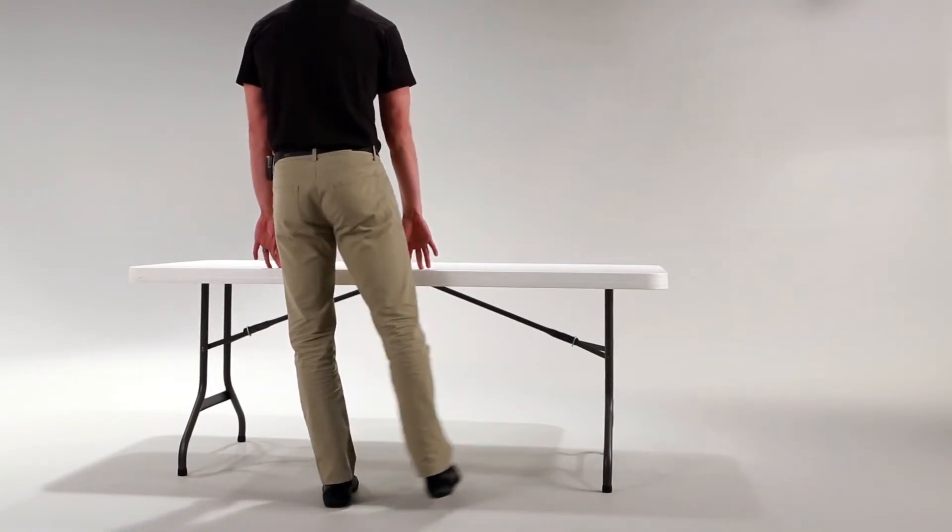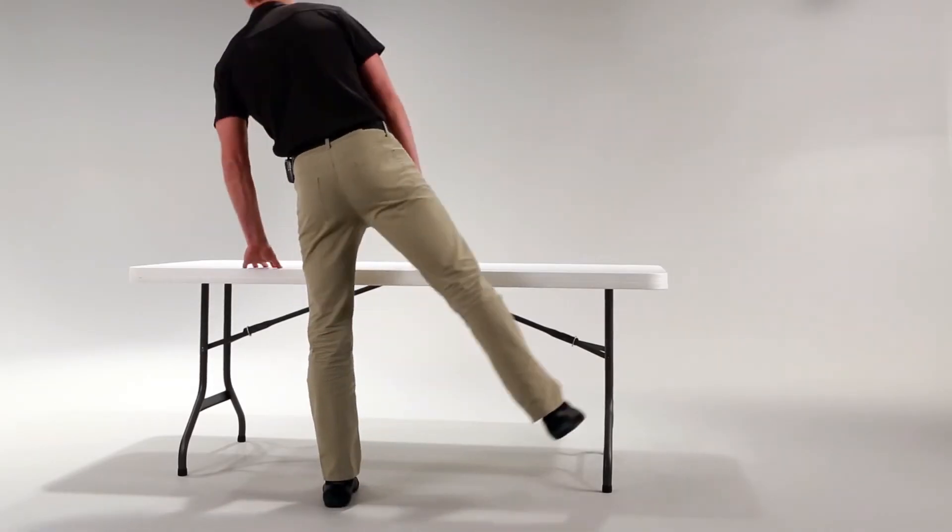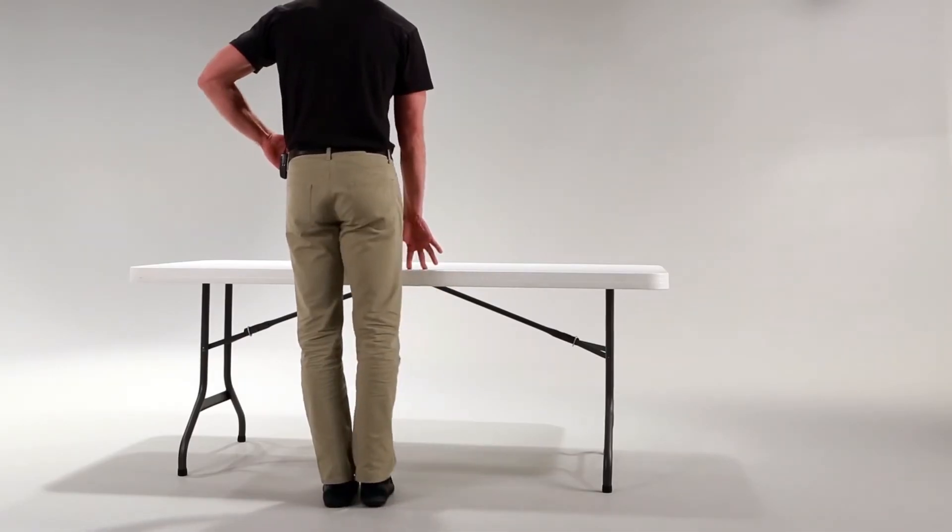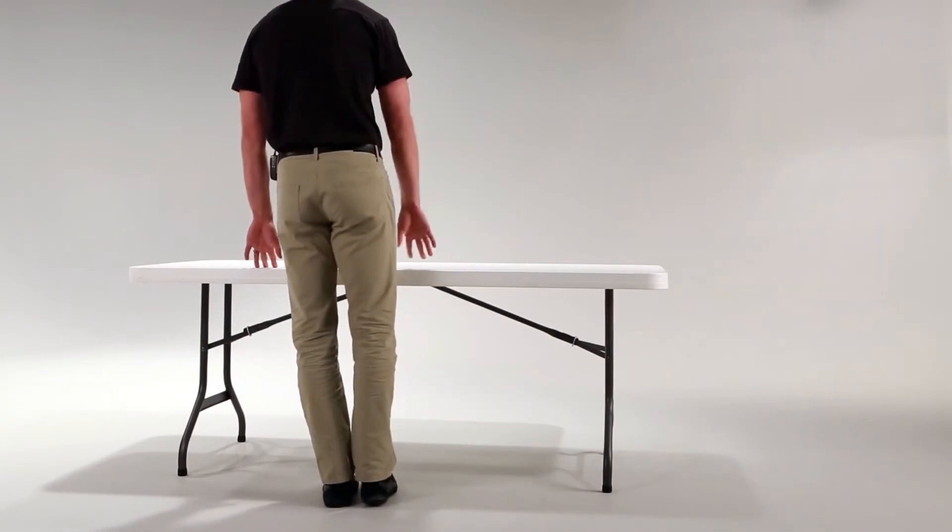When you lift your leg out to the side, you want to make sure that your trunk is upright and that you avoid leaning over. The other thing that you want to keep focused on is keeping your pelvis level and not letting it rotate to the side.